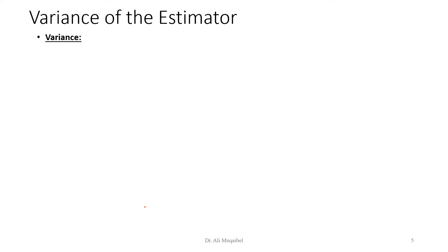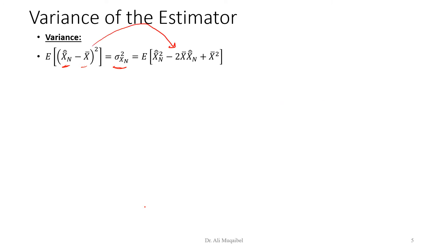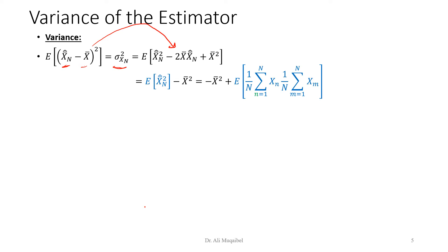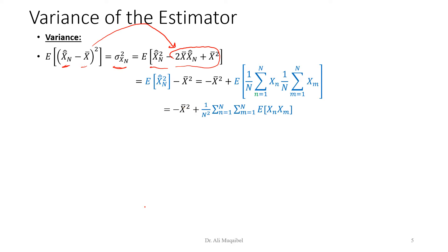The variance of the estimator is an important second measure. By definition, you take the estimator minus its mean, then square it. If we open the bracket and take the expectation, the two cross terms together end up as minus x-bar squared. This can be written as a double summation — using different variables m and n to distinguish the two summations — giving 1 over n squared times the double sum.